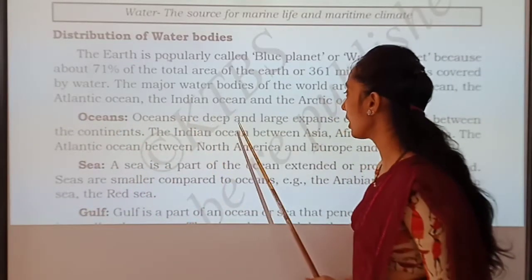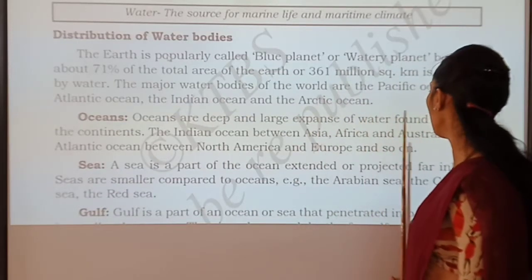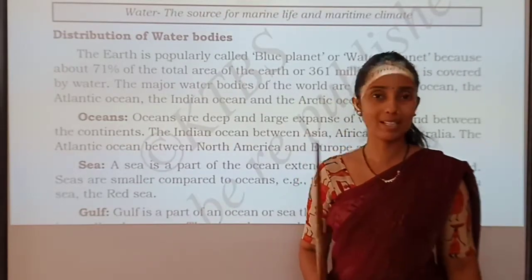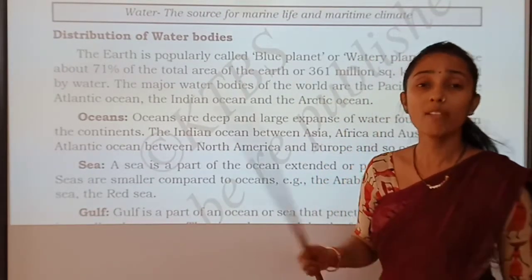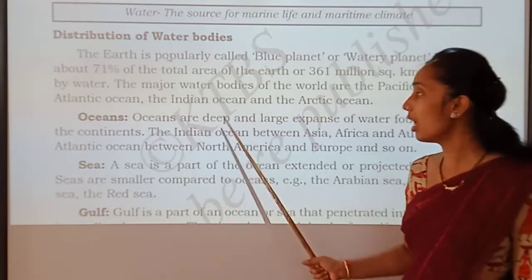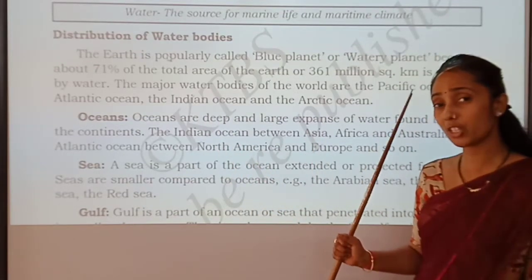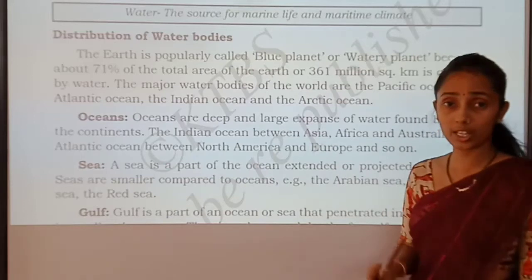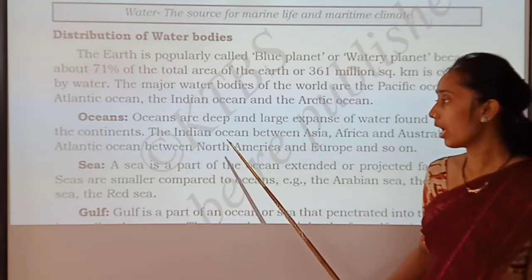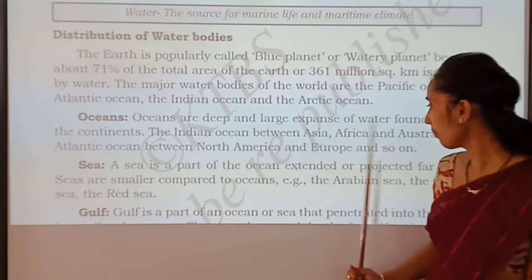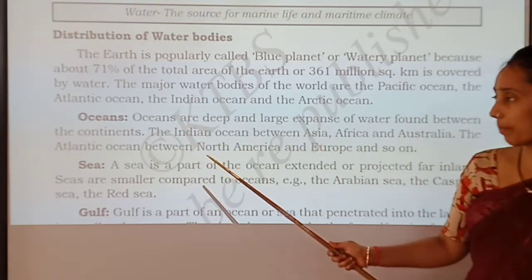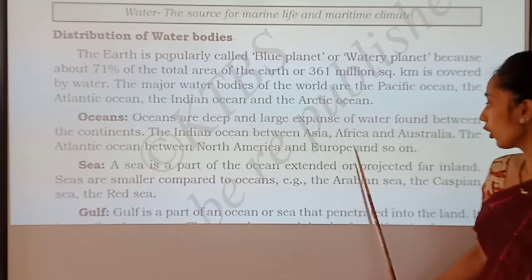Oceans are the large expansions of water found between the continents. The ocean is the largest and deepest expansion of water found on the earth where we exist. Examples are the Indian Ocean between Asia, Africa and Australia, and the Atlantic Ocean between North America, Europe and so on.